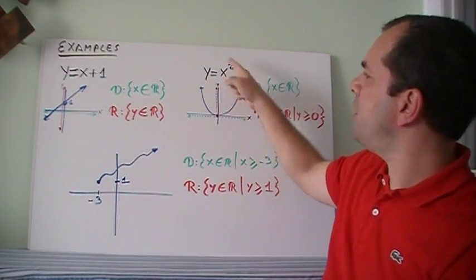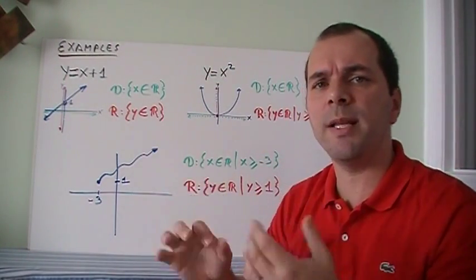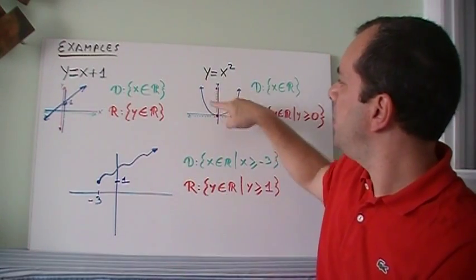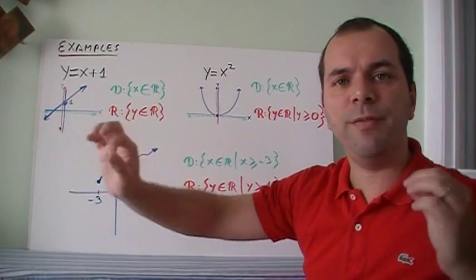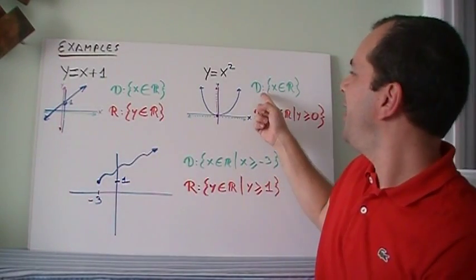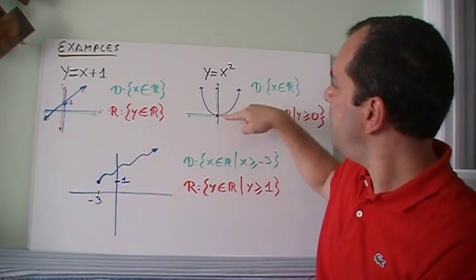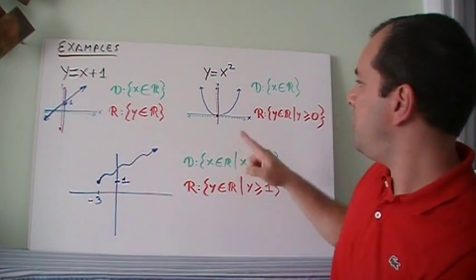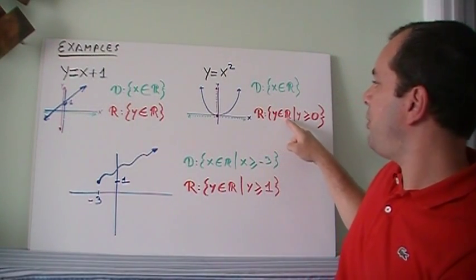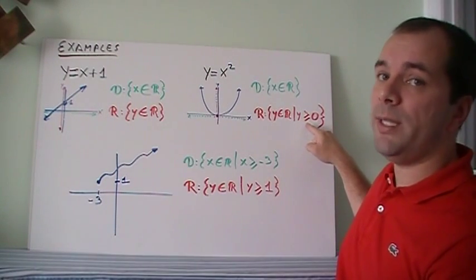If I have y is equal to x squared, well, hopefully you can plot that one too. If not, just do a table of values, plug in some numbers, and you will see that it has this shape. And it goes all the way from left to right to infinity and beyond. Therefore, the domain is x belongs to the real numbers. But for the y, it doesn't go anywhere below 0. So it's 0 including 0 and above. So I'm going to say y belongs to the real numbers such that y is greater than or equal to 0.